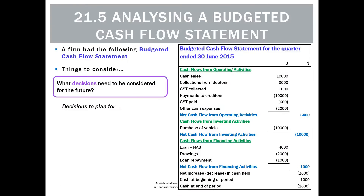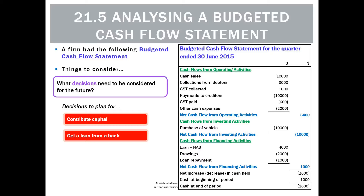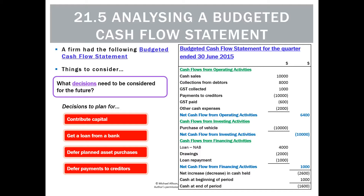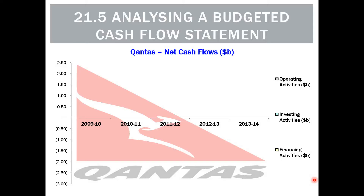What decisions need to be considered? This is the whole point of budgeting — we have a document that says this is how we think we'll be in three months, and we think there'll be a bank overdraft. So we can start making decisions: maybe contribute more capital, get a bigger loan than $4,000 from the bank, defer asset purchases like the car or computer until later in the year, defer payments to creditors by asking for an extension until we've sold more stock, or extend the firm's overdraft. We have $1,000 in the bank now, but we think we'll be in overdraft in three months, so we can organize that now.